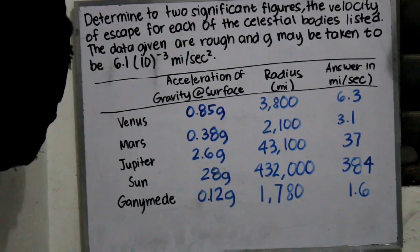Hello everyone, this is a new problem about application of differential equations. The problem is: determine to two significant figures the velocity of escape for each of the celestial bodies listed. The data given are rough, and g may be taken to be 6.1 times 10 raised to negative 3 miles per second squared. As we can see, we already have the table and the answer. So what we have to do now is just to prove that the answer in miles per second is the same as what we arrived to. Let's head on to the video.